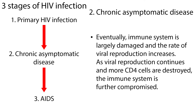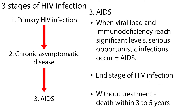Eventually, the immune system is largely damaged and the rate of viral reproduction increases. As viral reproduction continues and more CD4 cells are destroyed, the immune system is further compromised. When the viral load and immunodeficiency reach significant levels, serious opportunistic infections occur and the illness is termed AIDS.